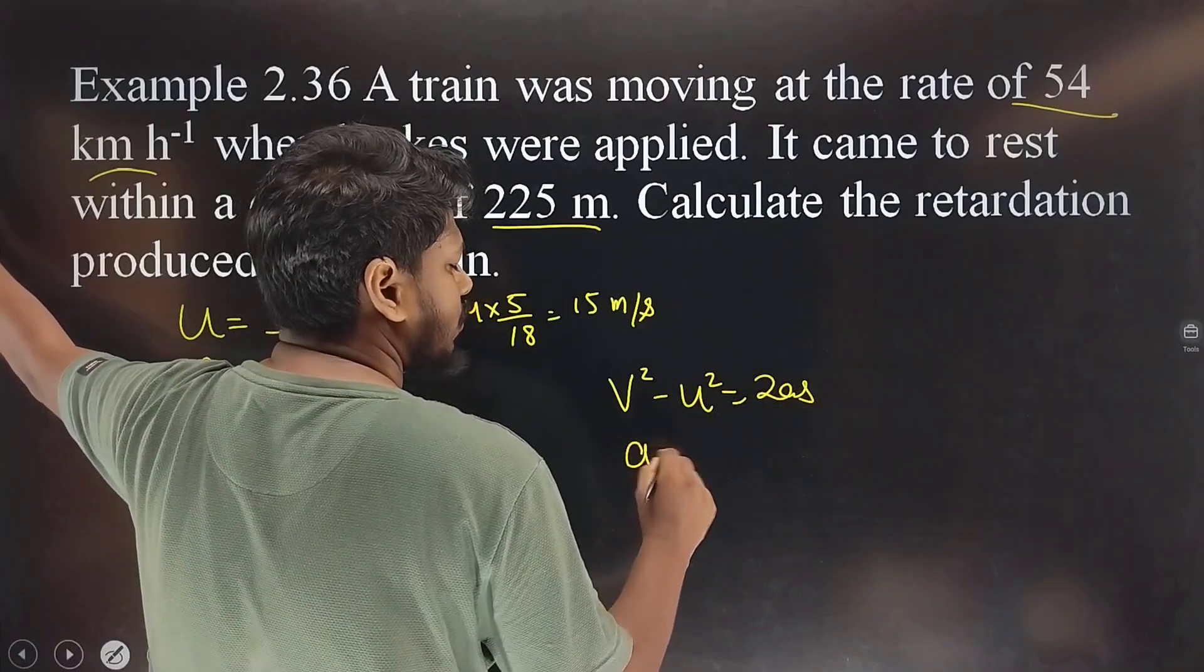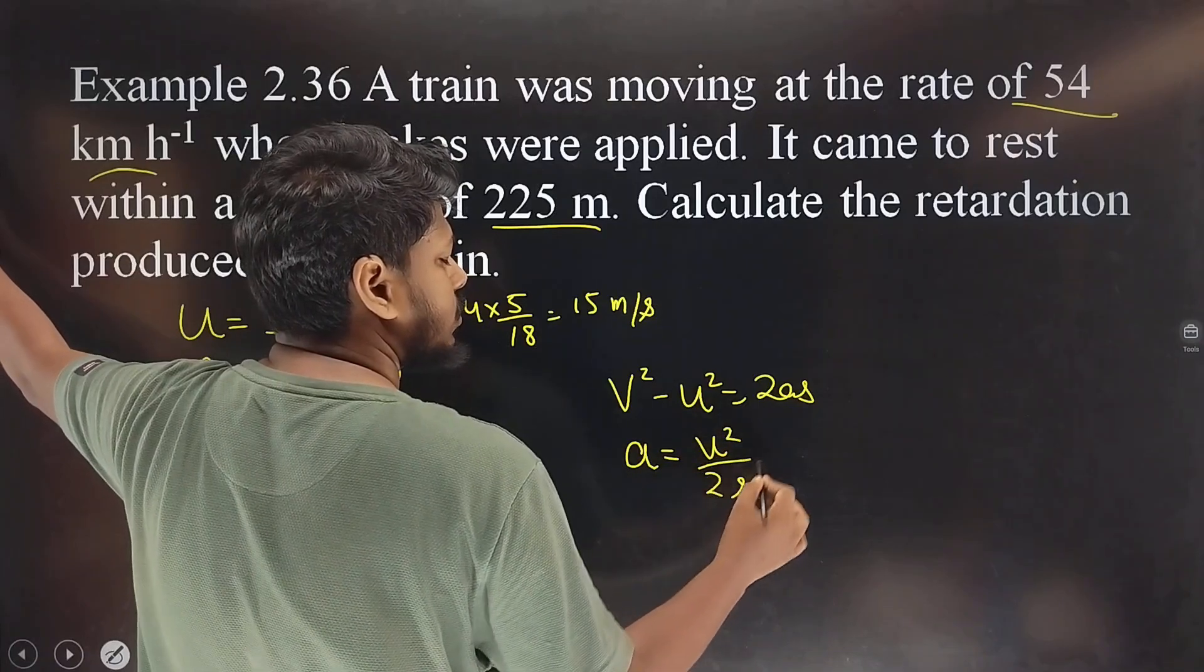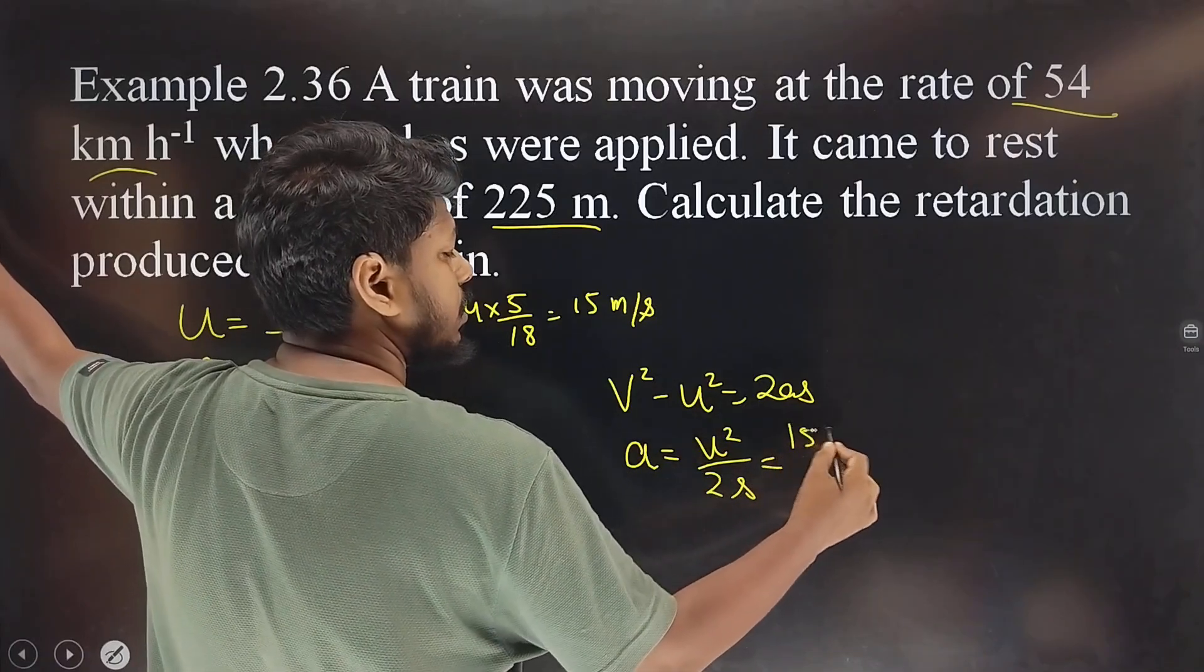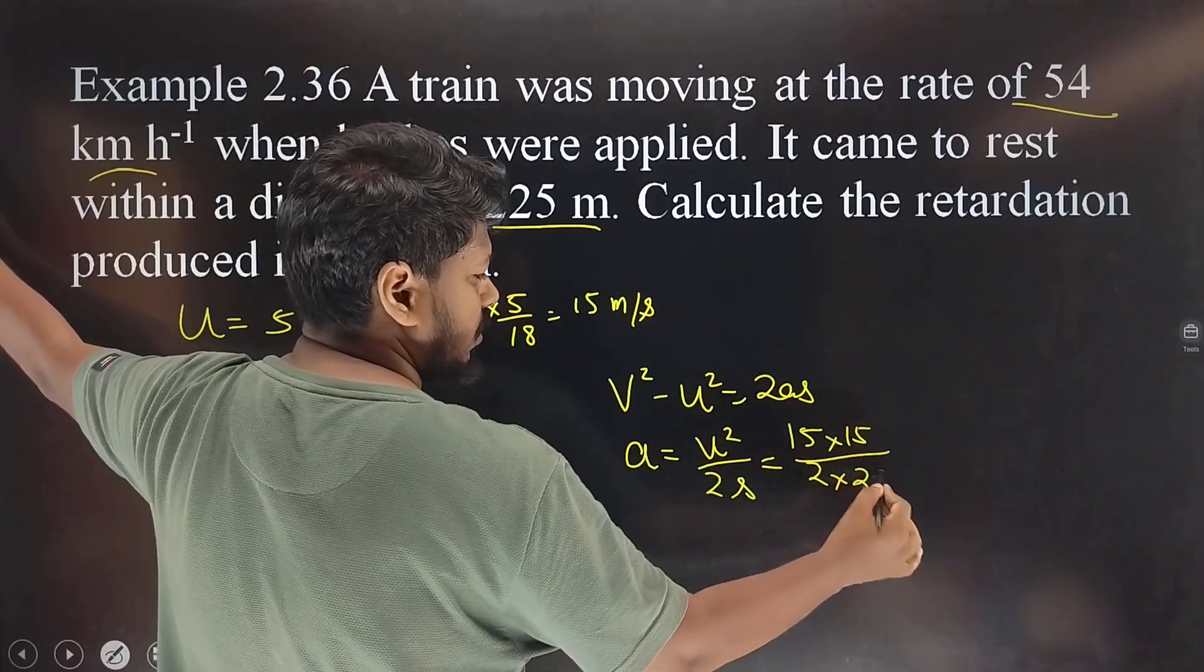So a equals negative u squared by 2s. You have 15 times 15 divided by 2 times the distance value of 225.